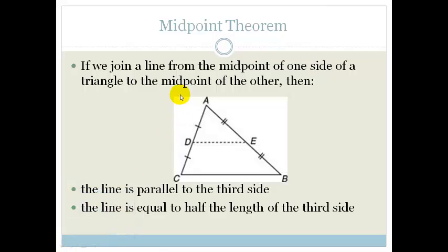If we have a triangle and we join a line from the midpoint of the one line to the midpoint of the other line, in other words, we now know that AD equals DC and that AE is equal to EB. And we've drawn this construction. Then the midpoint theorem states that this line is parallel to the third side, and that the line is equal to half the length of the third side.